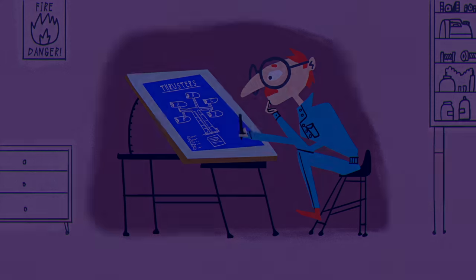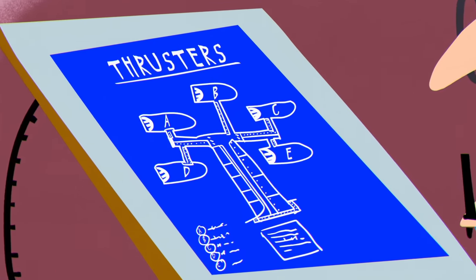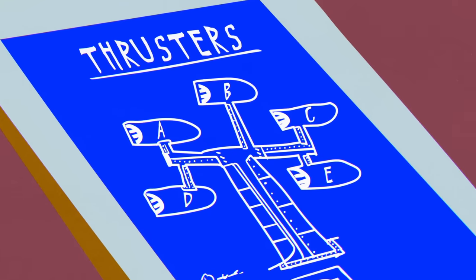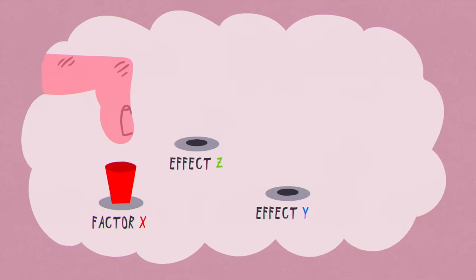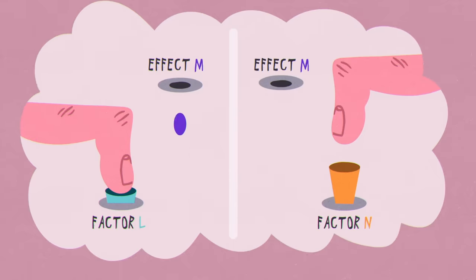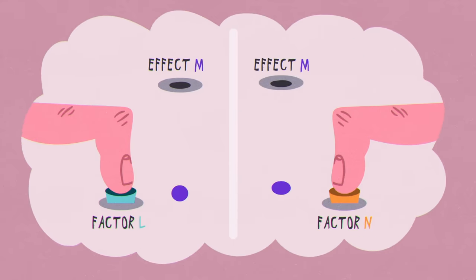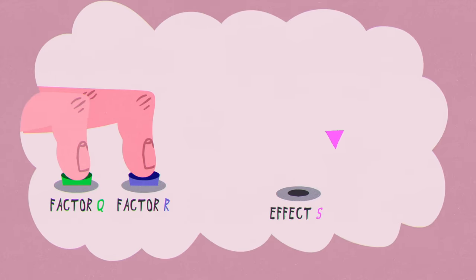Before his kidnapping, Uncle Slate determined that each of these critical failures was the ultimate result of a chain reaction originating in the thrusters. He was also certain that while one factor could trigger two different effects, and two factors could each independently lead to the same effect, no effect is caused by two factors in conjunction.